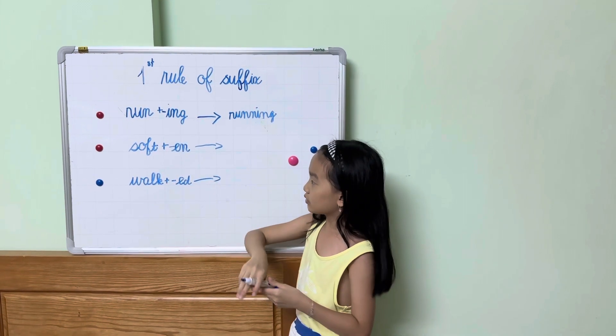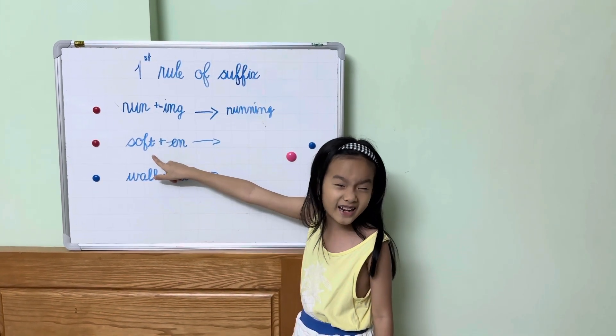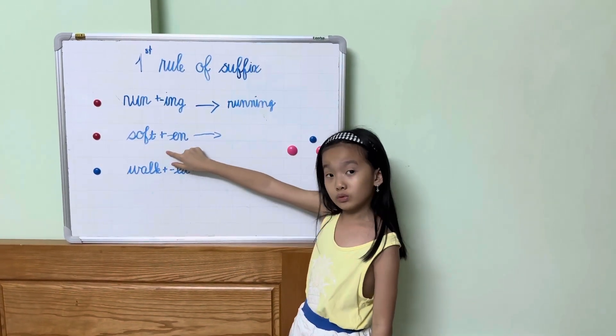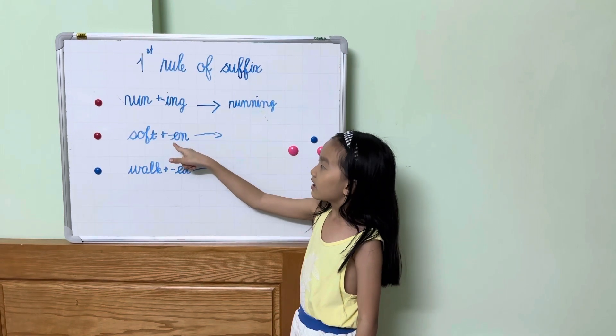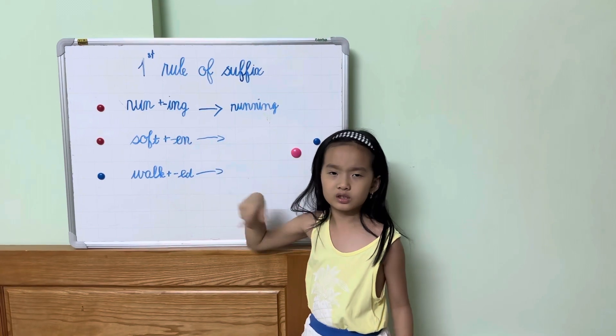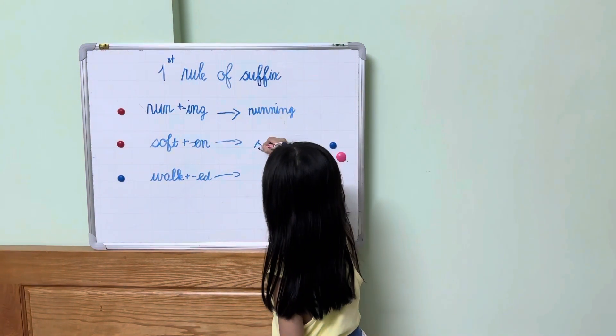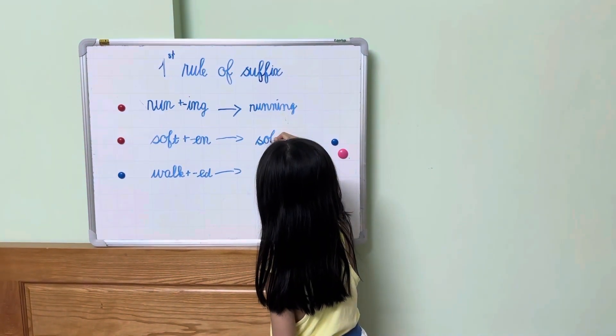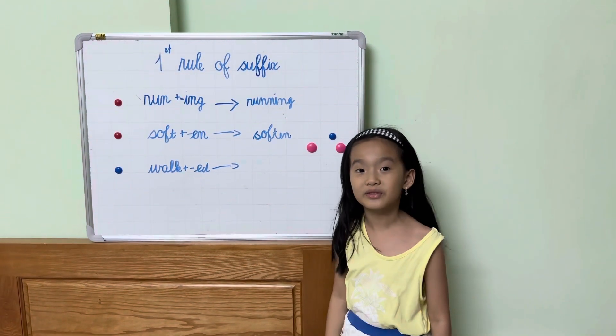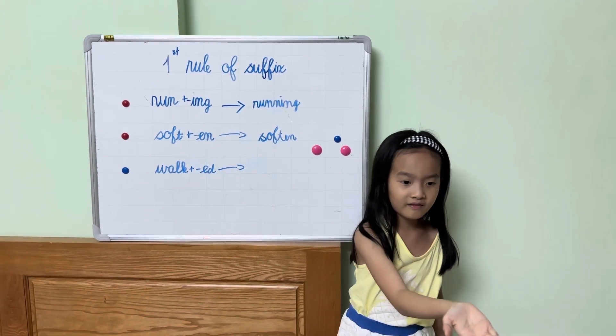Soften. Do you see the short vowel? Do you see one consonant? No, you do not see one consonant. You see two consonants. And this suffix will also begin with a vowel. No, so you do not double it. You write soften. So that's how you write the word soften. Read it with me. Soften. Good job.